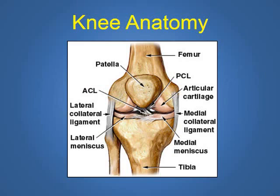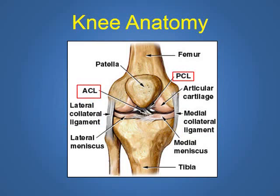In addition, there are four main ligaments of the knee joint. The medial collateral ligament connects the thigh bone to the shin bone on the inside part of the knee. The lateral collateral ligament connects the thigh bone to the fibula on the outside part of the knee. Finally, the ACL and PCL crisscross in the center of the knee.